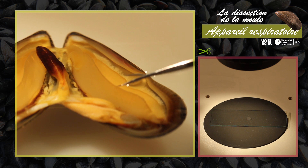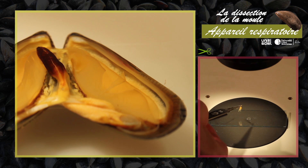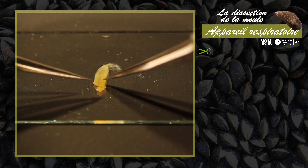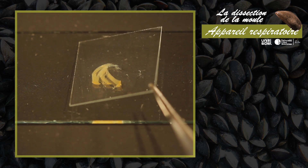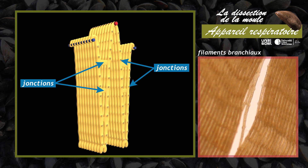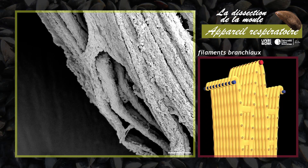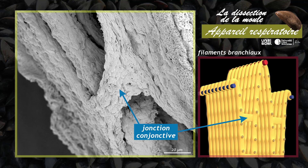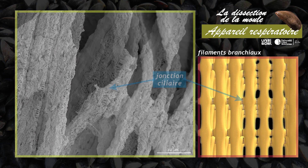Pour observer l'organisation des filaments, il faut prélever un fragment de branchie avec des ciseaux et le déposer sur une lame de microscope dans une goutte d'eau de mer. Séparez délicatement les filaments et les couvrir avec une lamelle. L'observation de cette préparation au microscope permet d'apprécier les jonctions entre les filaments branchiaux. Les filaments réfléchis sont reliés aux filaments directs par des jonctions conjonctives.